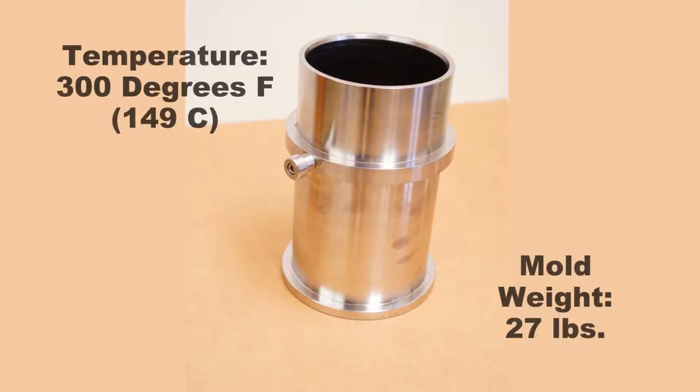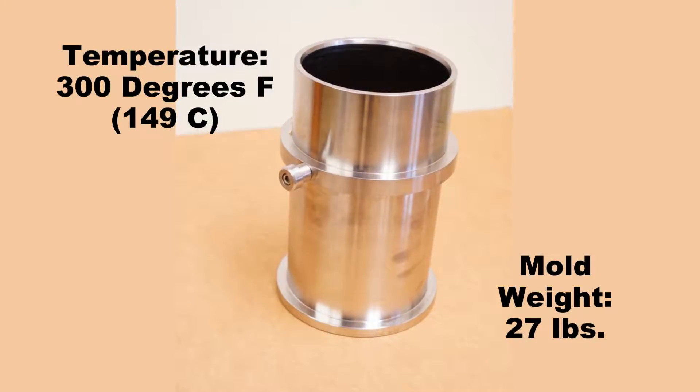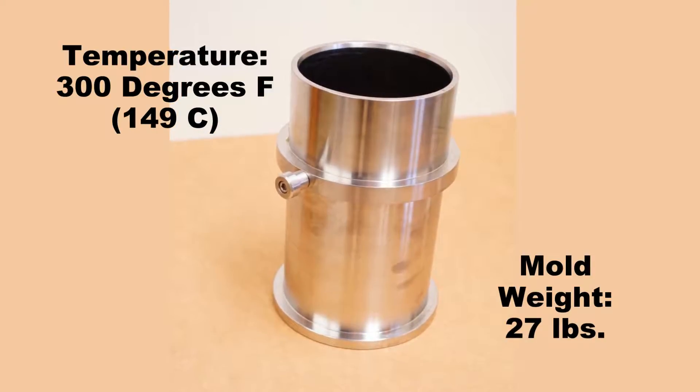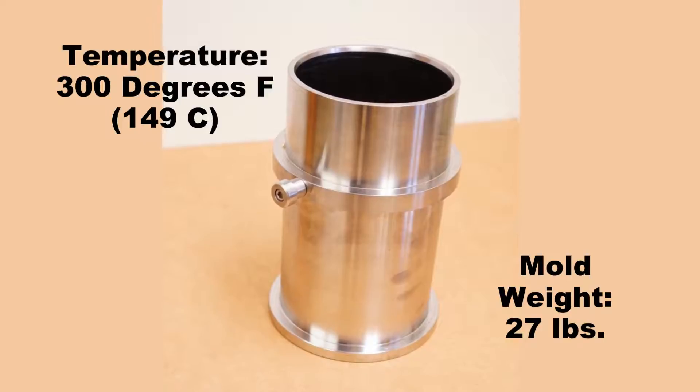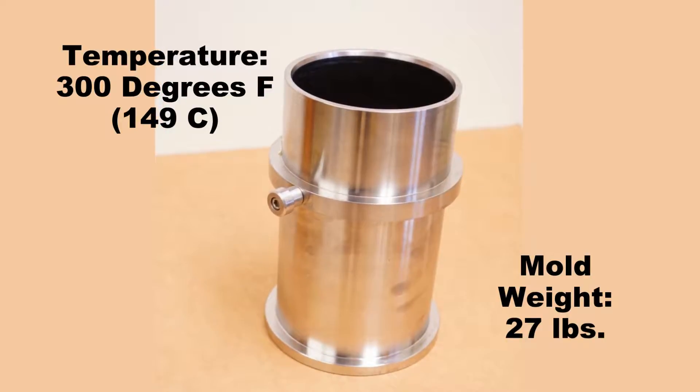A stainless steel mold is also heated to 300 degrees Fahrenheit. The asphalt mixture is placed into the mold. The filled mold is placed into the compaction chamber of the G-2.